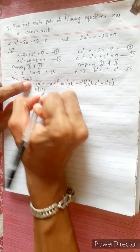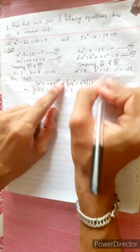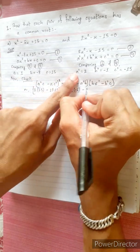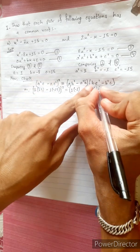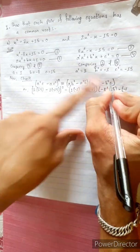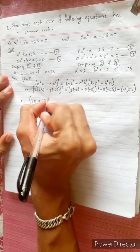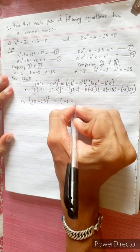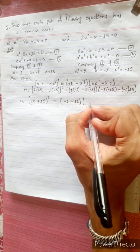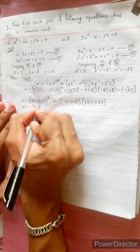Substituting: a equals 1, c-dash equals minus 15, a-dash equals 2, c equals 15. So a·c-dash minus a-dash·c equals 1×(minus 15) minus 2×15 equals minus 15 minus 30 equals minus 45. For the right side: a·b-dash minus a-dash·b equals 1×(minus 1) minus 2×(minus 8) equals minus 1 plus 16 equals 15. And b·c-dash minus b-dash·c equals (minus 8)×(minus 15) minus (minus 1)×15 equals 120 plus 15 equals 135... giving minus 45 squared.